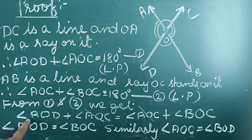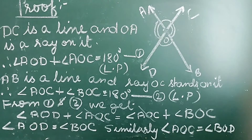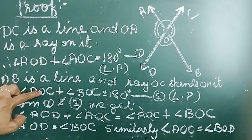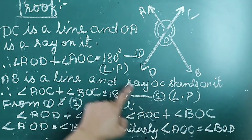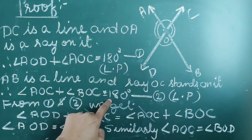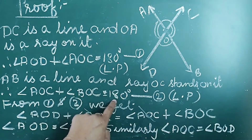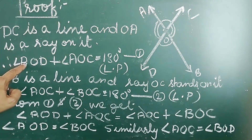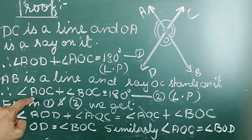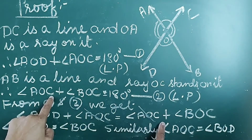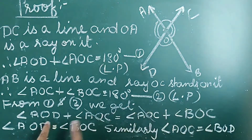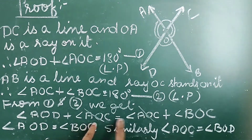From equations 1 and 2, we get: angle AOD + angle AOC = angle AOC + angle BOC. Since the RHS parts of both equations equal 180 degrees, we can equate the LHS parts: angle AOD + angle AOC = angle AOC + angle BOC. From this equation, we cancel angle AOC from both sides, as it appears on both sides.